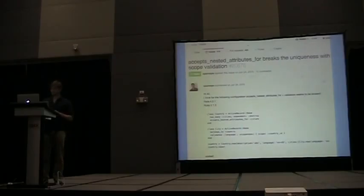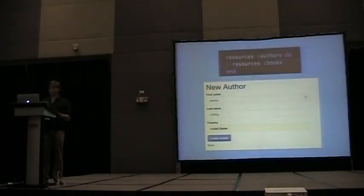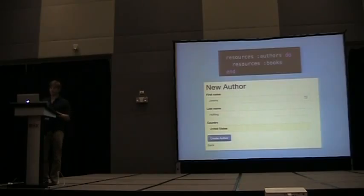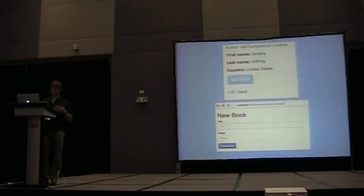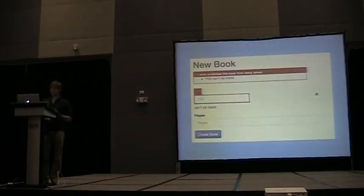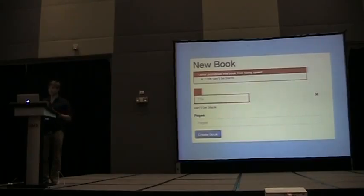What I suggest doing instead is just using the normal RESTful routes and creating your parent and child resources one at a time. First just create your author. Once you create it, you then have a link to start creating child resources. You can just add a book and then all the validations for that book will work because you just have a simple, clean form. My suggestion is to keep it simple — just avoid complex forms if you can.